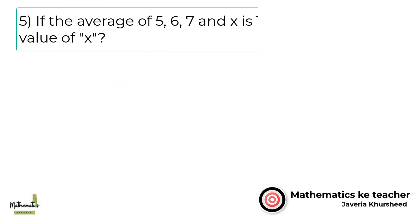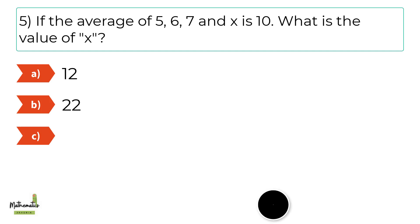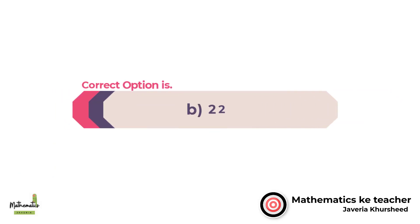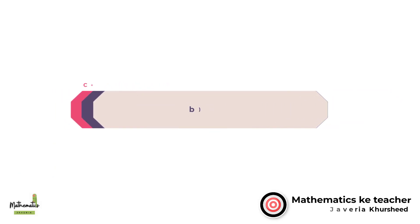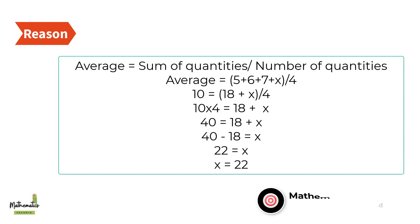Number 5. If the average of 5, 6, 7 and X is 10, what is the value of X? A. 12. B. 22. C. 32. D. 42. Correct option is B. 22. Since average equals sum of quantities by number of quantities: 10 = (5 + 6 + 7 + X) / 4, which gives 10 = (18 + X) / 4. Then by simplifying, X equals 22.